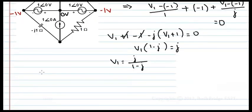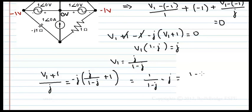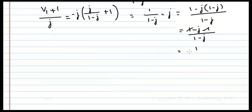We want current in the inductor. Current in the inductor is V1 plus 1 by j, voltage by the reactance. V1 plus 1 equals j by 1 minus j plus 1, into 1 by j can be written as minus j. This equals j into minus j is 1 by 1 minus j minus j, which equals 1 minus j into 1 minus j by 1 minus j. This equals 1 by j and minus j square is plus 1.